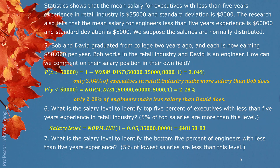Question 7: What is the salary level to identify the bottom 5% of engineers with less than five years' experience? We are looking for the 5% lowest salary, which is on the left side tail. So we can directly use 5% — 0.05 — as the input in the Excel function, which gives us the salary level of $51,775.73. This cutoff level identifies that below this value, 5% of engineers with similar work experience make this kind of salary.